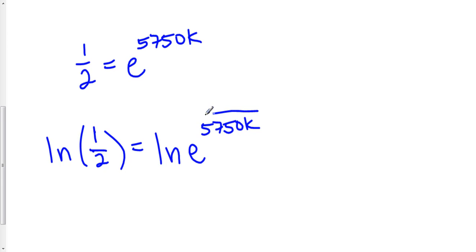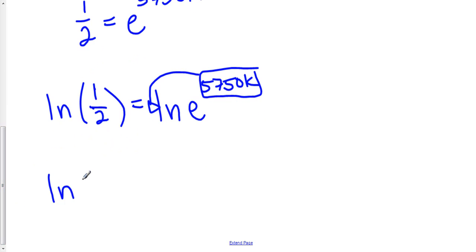And of course we can take our exponent, we can move that in front of the natural log of e, and the natural log of e is just one. And that leaves us with the natural log of one-half is equal to 5750 k.